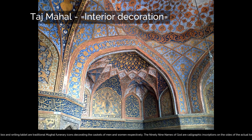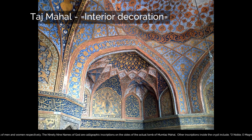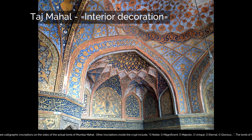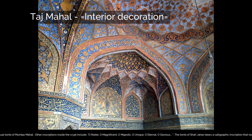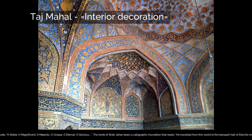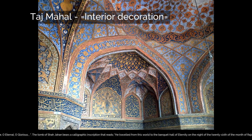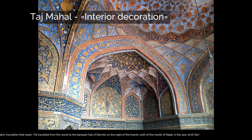The 99 names of God are calligraphic inscriptions on the sides of the actual tomb of Mumtaz Mahal. Other inscriptions inside the crypt include: "O Noble, O Magnificent, O Majestic, O Unique, O Eternal, O Glorious." The tomb of Shah Jahan bears a calligraphic inscription that reads: "He traveled from this world to the banquet hall of eternity on the night of the 26th of the month of Rajab, in the year 1076 Hijri."